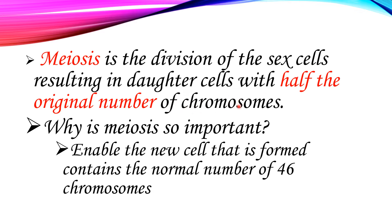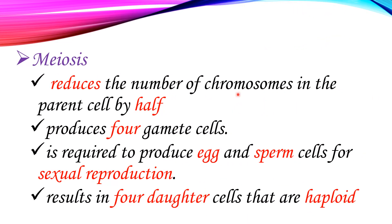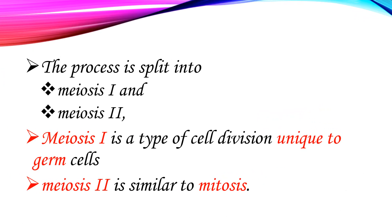Why is meiosis so important? Meiosis reduces the number of chromosomes in the parent cell by half. This is true for all animals. The process is split into two stages: meiosis one and meiosis two.